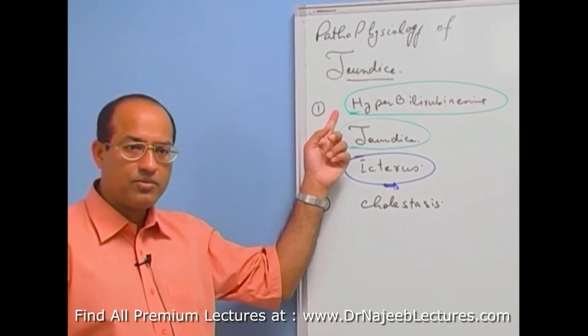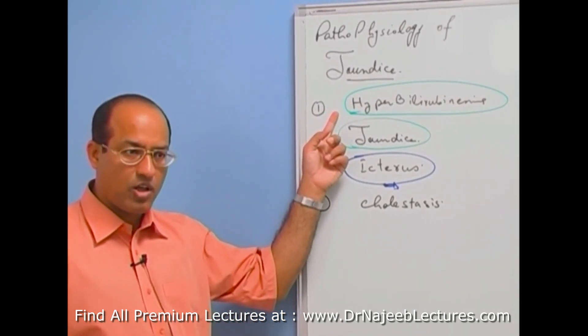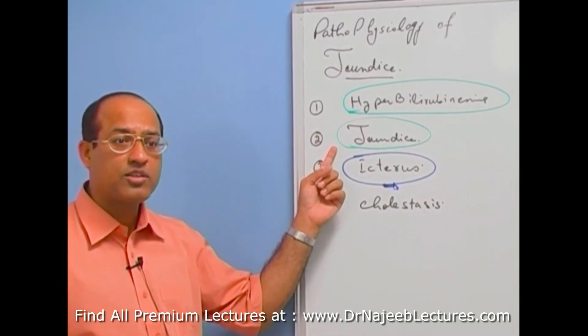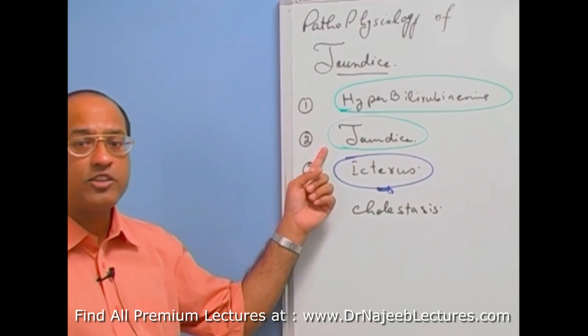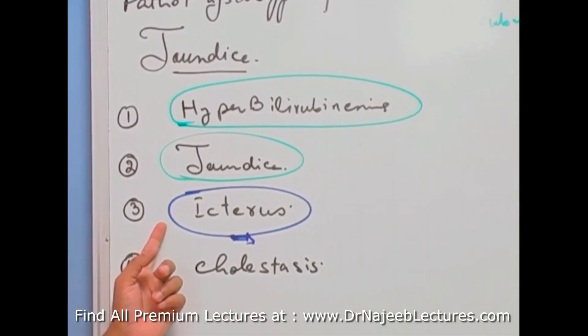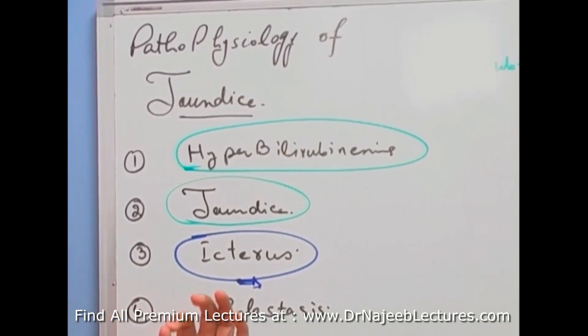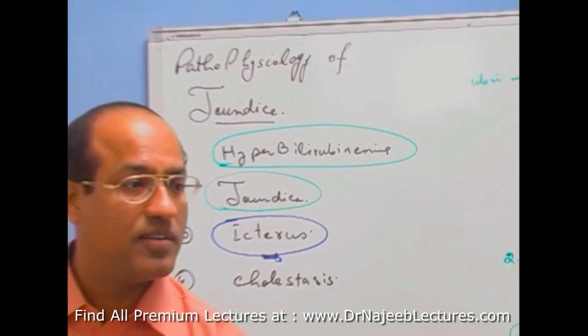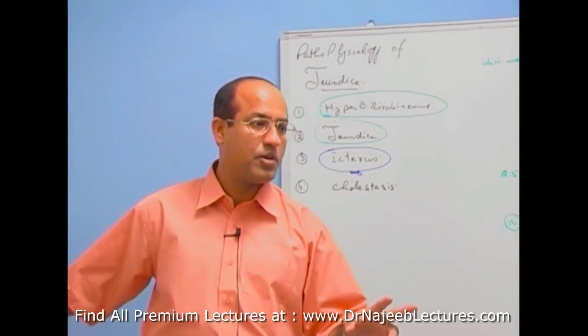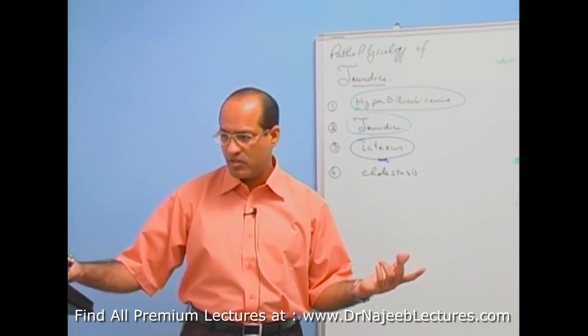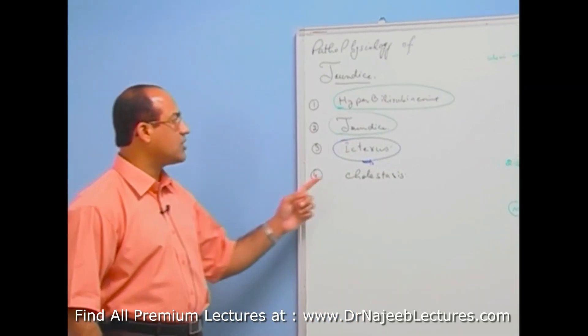What is hyperbilirubinemia? When your bilirubin level is more than normal. What is jaundice? When hyperbilirubinemia lead to yellow coloration of skin, mucous membrane, sclera and interstitial fluids. Right? What is icterus? When we are specifically referring to yellow coloration of sclera due to hyperbilirubinemia. Due to hyperbilirubinemia. Because if there is yellow coloration of body tissue due to some other reason, that should not be considered jaundice.